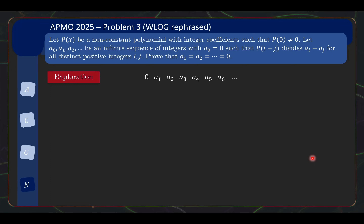So let's go ahead and make that change. What we have now is: same polynomial with integer coefficients, P(0) not zero, but my sequence starts from A0 instead, and A0 is equal to zero. I still have this special divisibility property, and to prove the sequence is constant I just need to show that every remaining term is actually equal to zero.